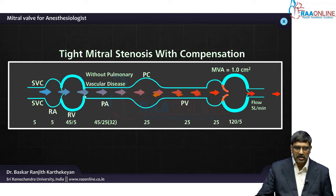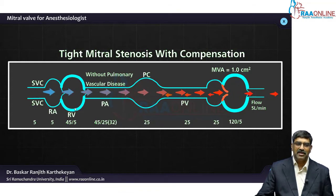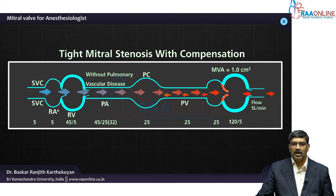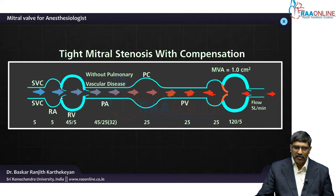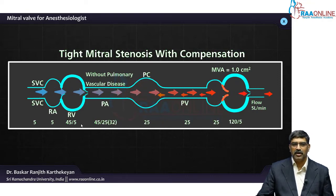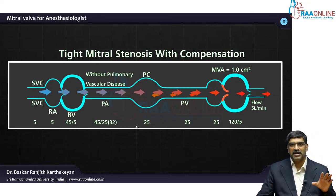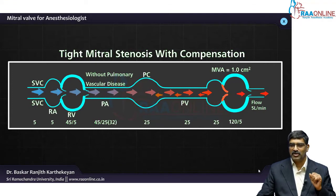The pulmonary vascular disease has not developed yet, so RV pressure is still not very high. If tricuspid regurgitation sets in, the RA pressure will go up. This is compensated mitral stenosis.